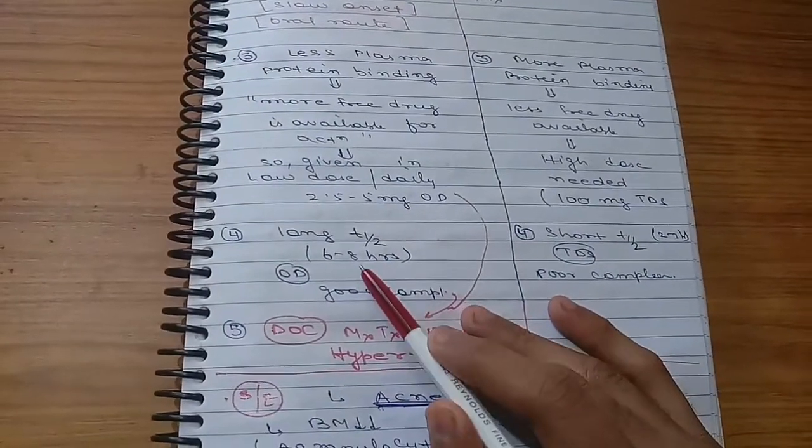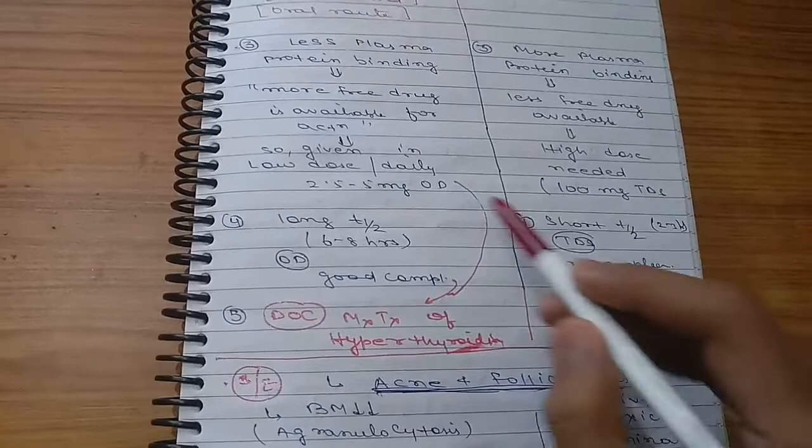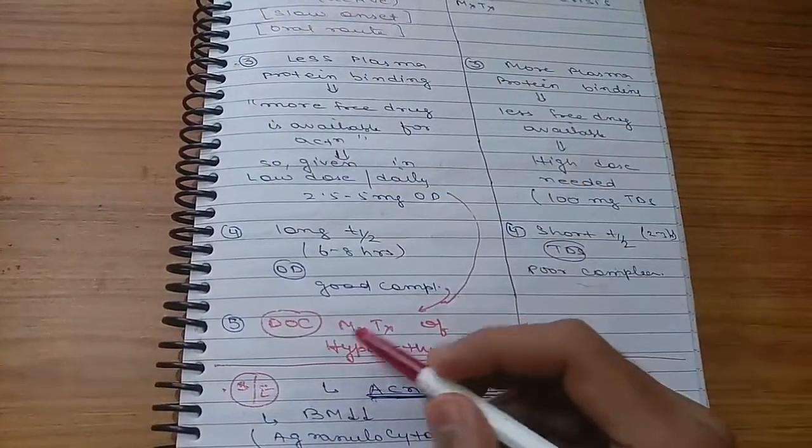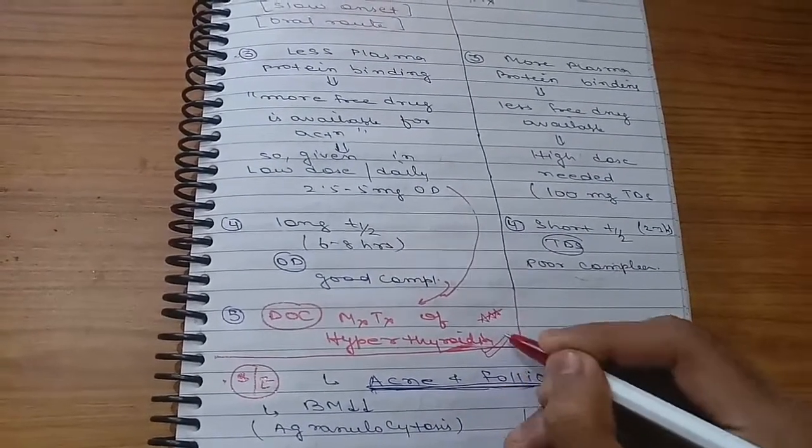Carbimazole has long half-life, 68 hours, so it has good compliance. Propylthiouracil has short half-life, so it has poor compliance.